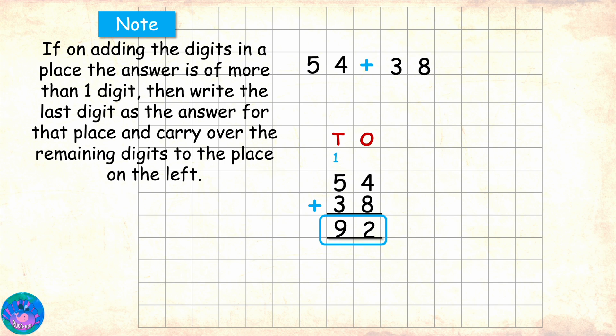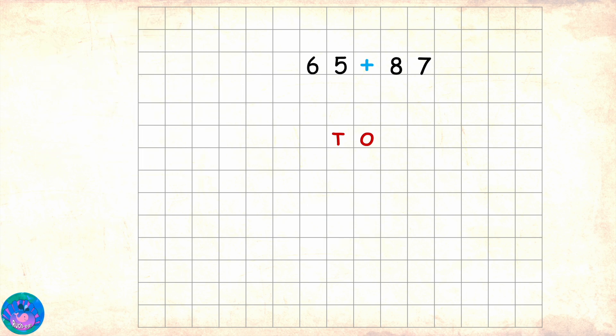I have one more doubt. What if the answer for the tens place is also having more than one digit? Well, in that case, we will still follow the same rule. Let's see with an example. 65 plus 87.